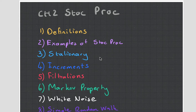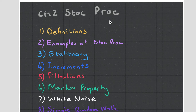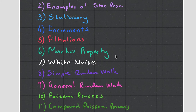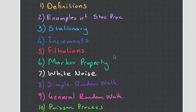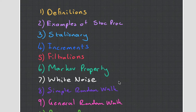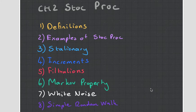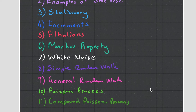Hey guys, it's MJ, the student actuary, and we're talking about chapter 2 in CT4, which is on stochastic processes, or as I like to call it, stock proc. As you can see, there are a lot of things in this chapter. This course is difficult, and what I'm going to do in this video is briefly talk about each one. I'm not going to go into much detail, just the general things.